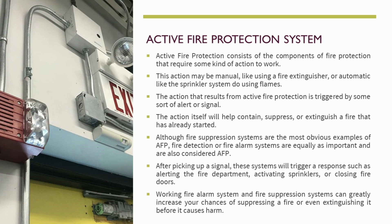Although fire suppression systems are the most obvious examples of active fire protection, fire detection and fire alarm systems are equally important and are also considered active fire protection. After picking up a signal, these systems trigger a response such as alerting the fire department, activating sprinklers, or closing fire doors, greatly increasing your chances of suppressing or extinguishing a fire before it causes harm.